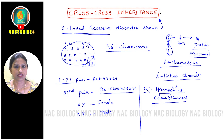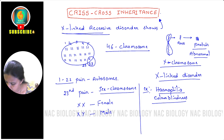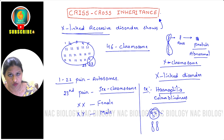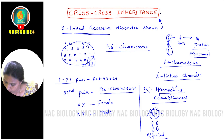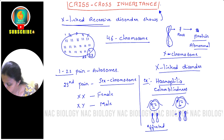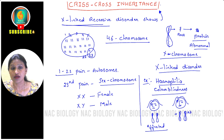Why are they called recessive? These diseases start showing symptoms in a female only when the defective gene is present on both X chromosomes. If a girl has the defective gene on only one X chromosome and a normal gene on the other, she does not show any symptoms — she is considered a carrier female.